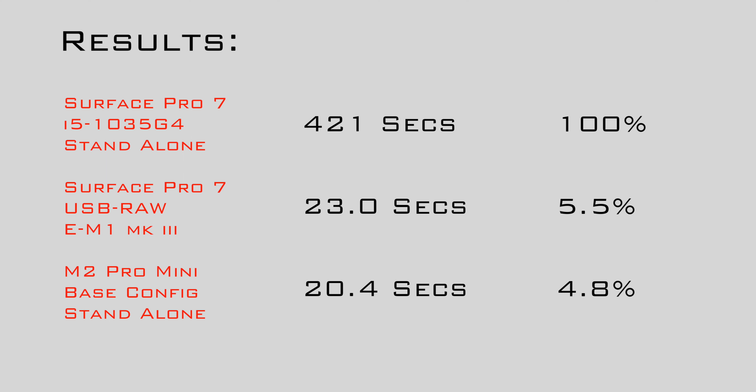By contrast, it's very cool that simply by attaching the camera to the Surface Pro — which is a fairly basic computer by 2023 standards — the export is in the same ballpark as the new M2 Pro chip. I'm pleased to see that a modestly specced mobile Windows device like my Surface Pro 7 is able to run OM Workspace, and even happier that utilizing the USB RAW functionality actually makes it very bearable.